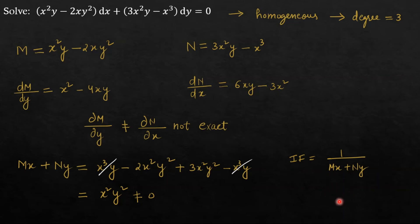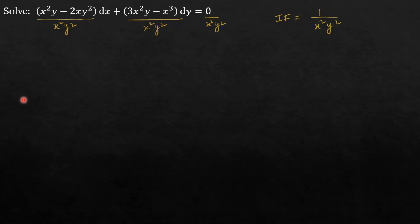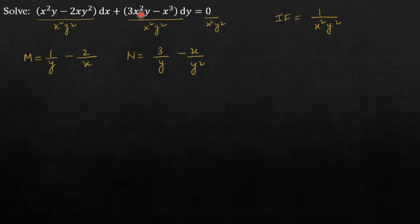So the integrating factor is 1/(x²y²). To make the differential equation exact, we multiply both sides by this integrating factor. The new value of M becomes 1/y − 2/x, since x²y ÷ x²y² = 1/y and 2xy² ÷ x²y² = 2/x. Similarly, the new value of N becomes 3/y − x/y².